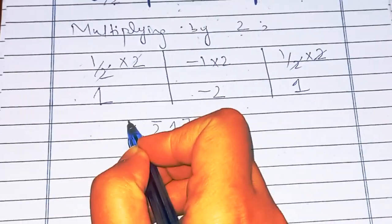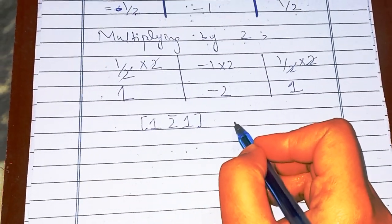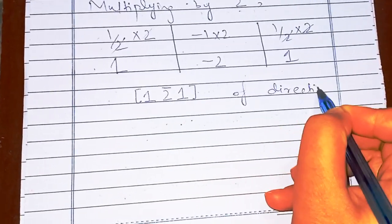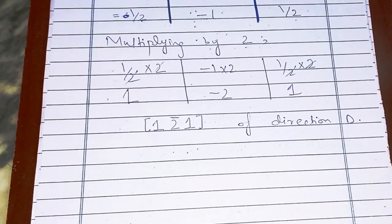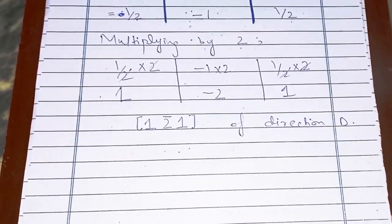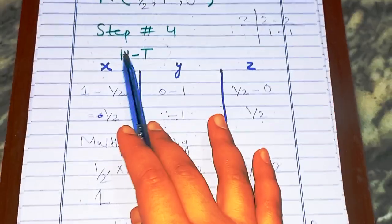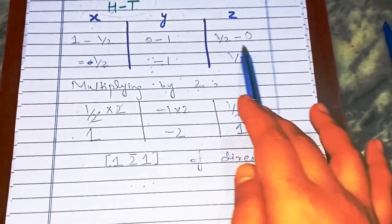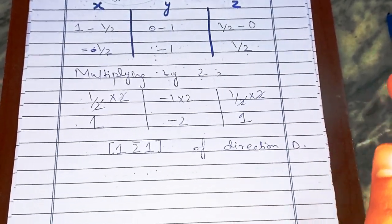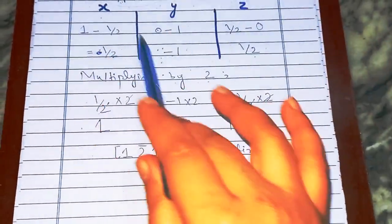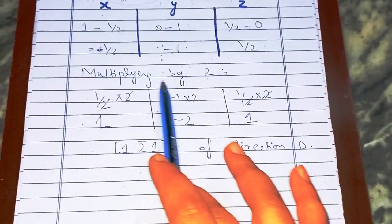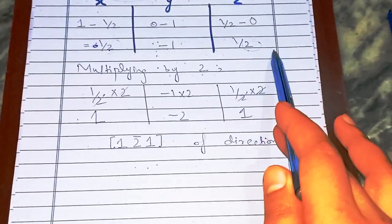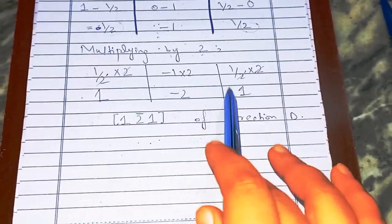So the Miller indices of direction D are [1 2̄ 1]. To summarize: define the coordinate system, find the head and tail coordinates, subtract them, then make sure the numbers are not fractions — multiply by the LCM of denominators to remove fractions, just as we did here by multiplying by 2.